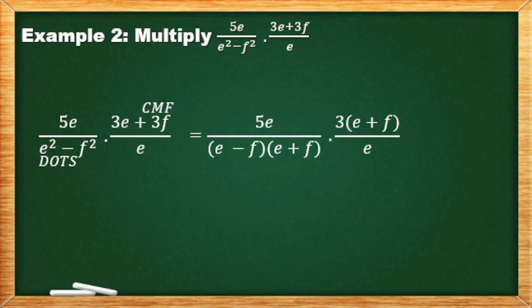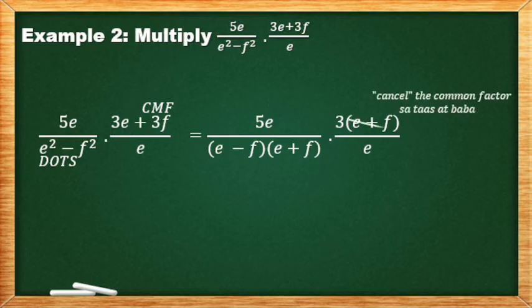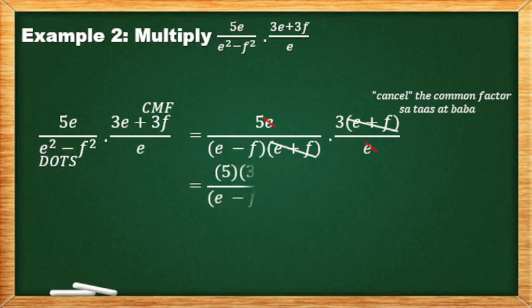Pinactored out si 3, we have 3×(e+f). Then, dots — the square root of e² is e, the square root of f² is f: (e+f)(e−f). May makasal? Yes — the (e+f), at saka yung e. Maka-cancel natin yung e+f kasi isang term lang siya. Ano na tira sa taas? 5×3 all over (e−f). So, the final answer is 15/(e−f).